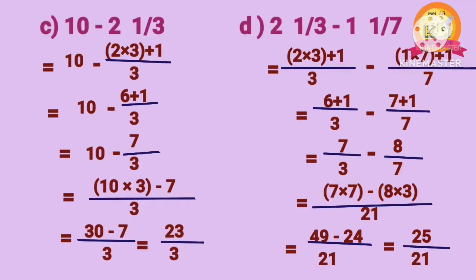Problem C: 10 minus 2 1 by 3. After converting 2 1 by 3 into an improper fraction, we get 7 by 3. That is 10 minus 7 by 3. After subtracting, we get 23 by 3. Problem D: 2 1 by 3 minus 1 1 by 7. After converting both mixed fractions into improper fractions, we get 7 by 3 minus 8 by 7. The LCM of 3 and 7 is 21. After subtracting, we get 25 by 21.